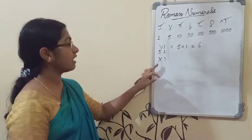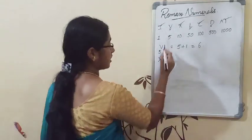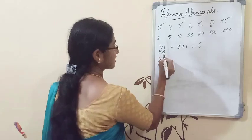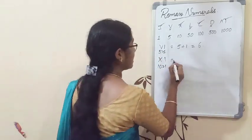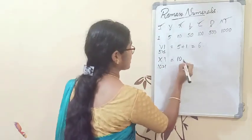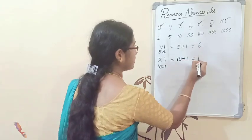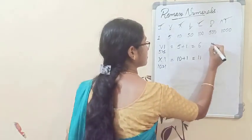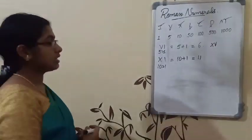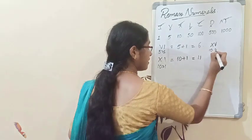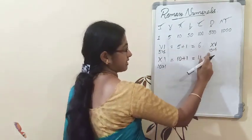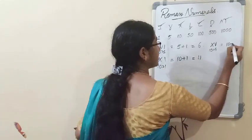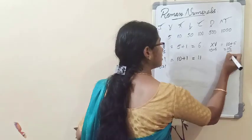Another example: XI. X has value ten, I has value one. Since ten is greater than one, we add. In the Hindu-Arabic system, ten plus one equals eleven. One more example: XV. X is ten, V is five. Since ten is greater than five, we add: ten plus five equals fifteen.